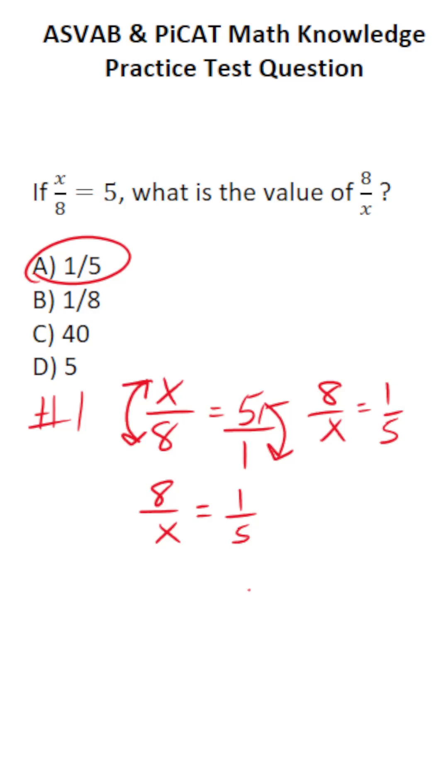So the correct answer to this one is A. That said, here's the second way to solve this one. We know x over 8 equals 5. We can treat this like an equation and actually solve for x. We would multiply both sides of the equation by 8. This crosses out, leaving you with x over here. 5 times 8 is 40.